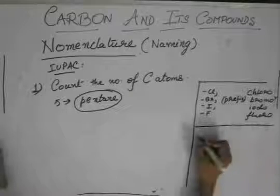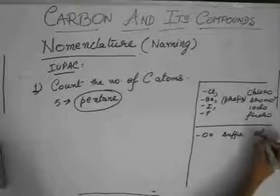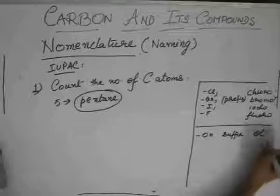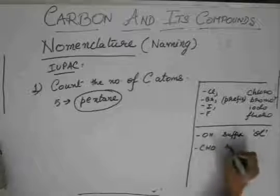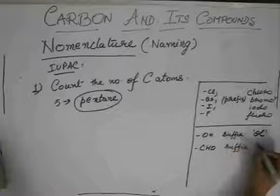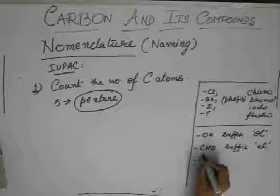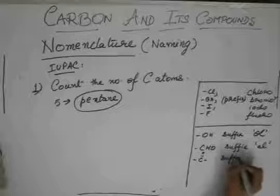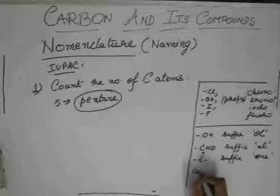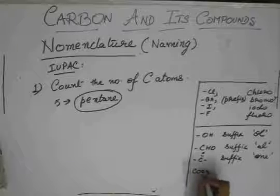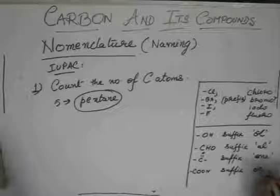For alcohols, we have the suffix -ol. For aldehydes, we have the suffix -al. For ketones, we have the suffix -on and for acid, we have the suffix -oic acid.